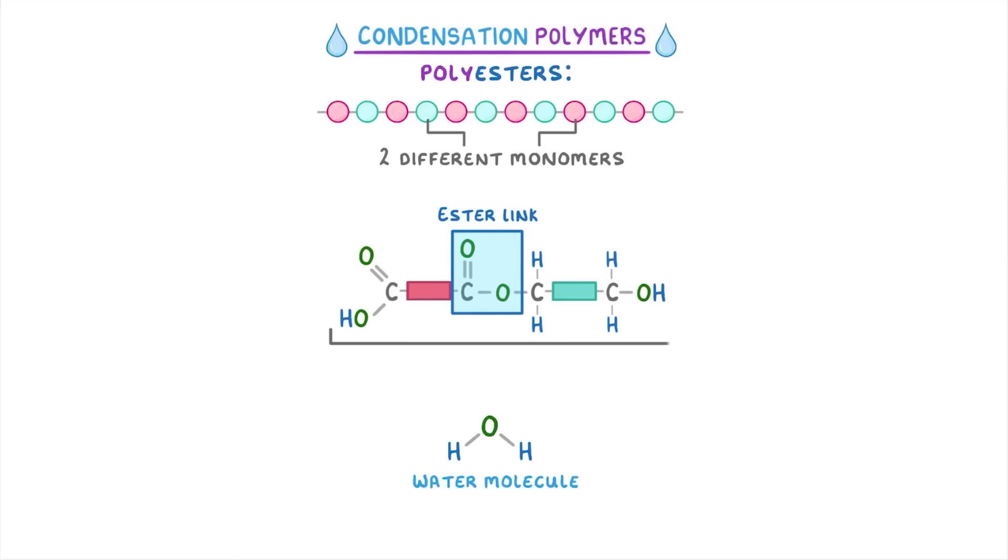At the moment this is technically just a dimer because it's only two monomers combined. To show it as a repeating unit though, we need to remove this OH and H from the ends and then point the empty bonds out to the sides so they can bond onto other repeating units. Importantly, because we removed an OH and hydrogen again, it will form another water molecule. Then to finish, we add these big brackets to either end that cut through the bonds.